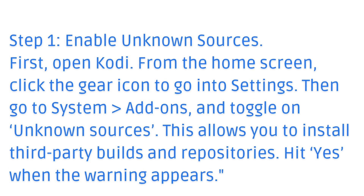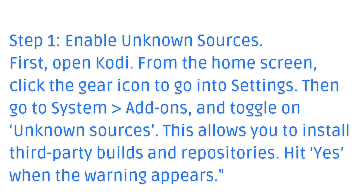Step 1: Enable Unknown Sources. First, open Kodi. From the home screen, click the gear icon to go into Settings. Then go to System, then Add-ons, and toggle on Unknown Sources. This allows you to install third-party builds and repositories. Hit Yes when the warning appears.